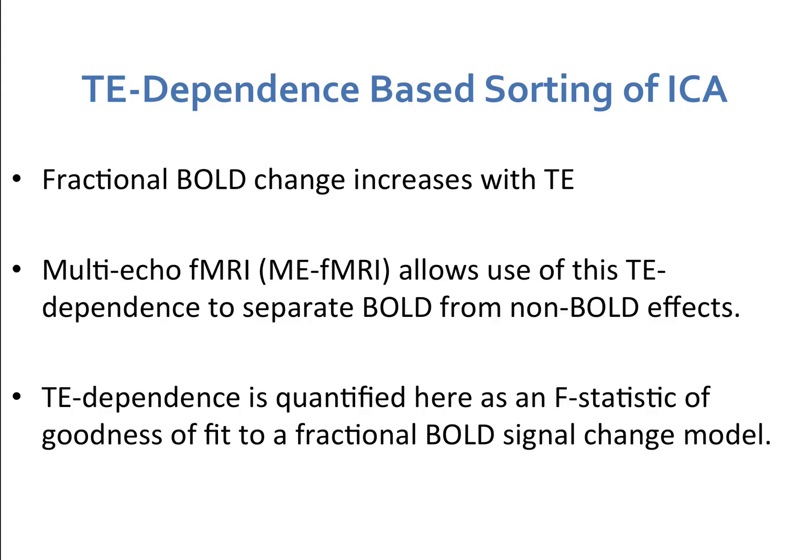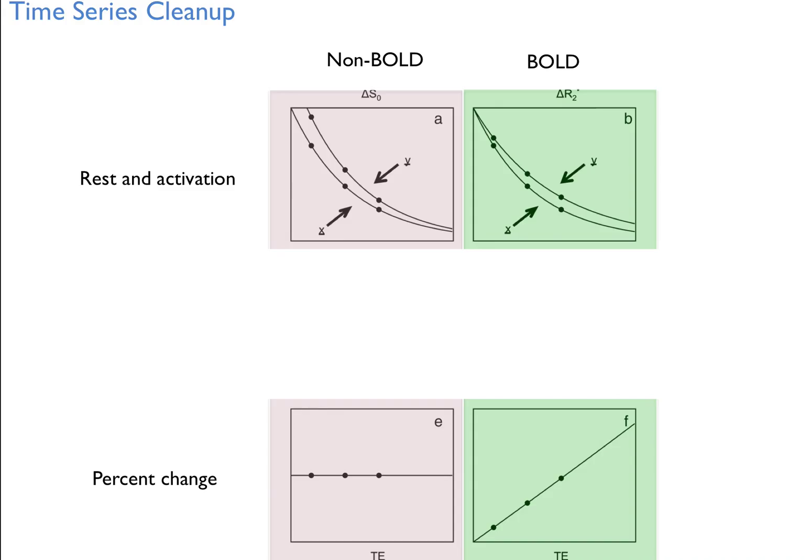If we break the signal — the time series — down into ICA components, and if those ICA components show an echo time dependence, we keep them; they're considered good. If they don't show an echo time dependence and don't fit the model we create, they're bad. We either remove them or use that signal from those bad components as regressors to regress out the noise from the time series.